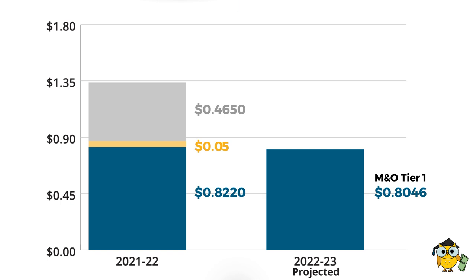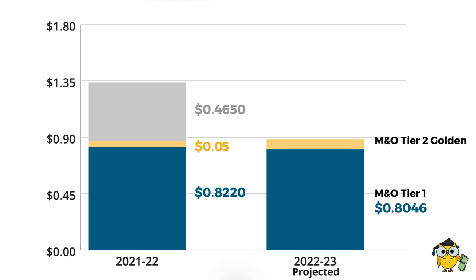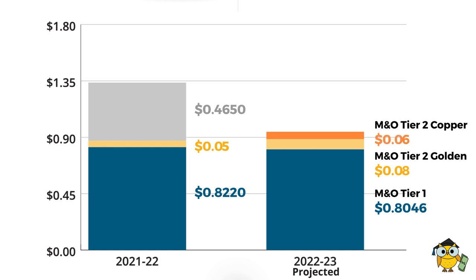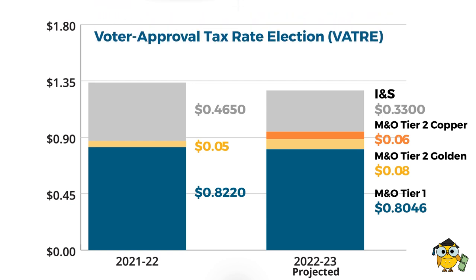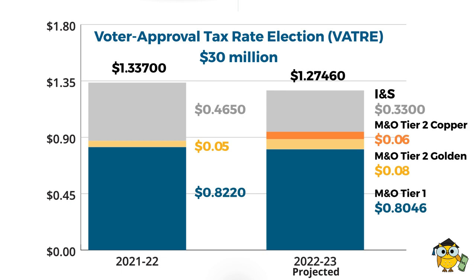Through a VATRE, the district could look to access the three remaining golden pennies, bringing this to a total of eight cents, and also access six of the available copper pennies. Offsetting this M&O increase is a reduction of the INS rate by more than 13 pennies. In this scenario where the board sets a tax rate to trigger a nine-cent VATRE — the three remaining golden pennies and the six copper pennies — and this VATRE passes in November 2022, the resulting total tax rate would be more than six cents lower than where it is now, while also generating an additional thirty million dollars in revenues for the district to cover increases in pay for staff and address the operating budget deficit.